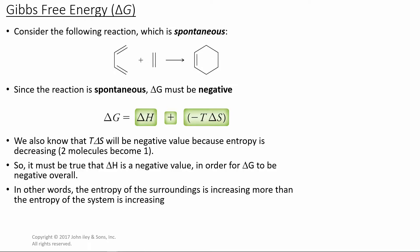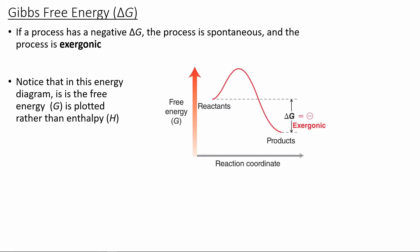If the reaction is spontaneous, then delta G must be negative, because we're going from two molecules to one molecule — a decrease in entropy, becoming more ordered — so this whole term must be negative. For the Gibbs free energy to be negative overall, the change in entropy must also be negative. Basically, the entropy of the surroundings is increasing more than the entropy of the system is increasing. If a process has a negative delta G, then the process is spontaneous and it's exergonic. The delta G is the relationship for the free energy comparing the reactants to the products. Since our reactants are higher in Gibbs free energy than the products, we have an exergonic reaction.